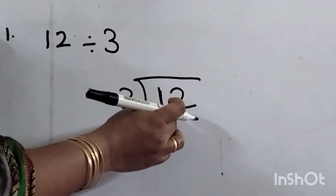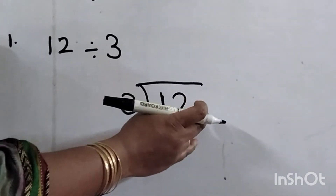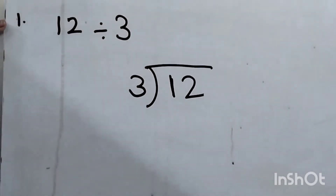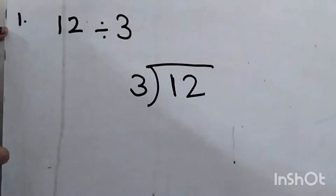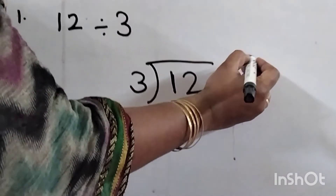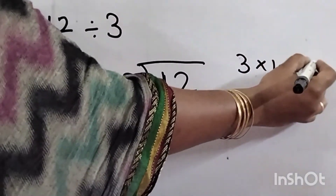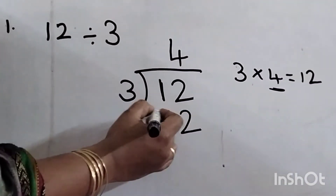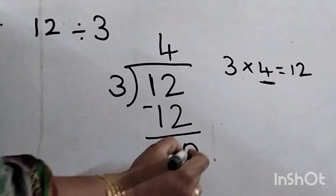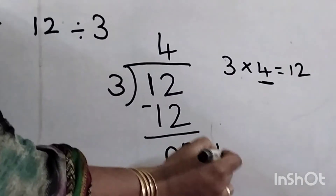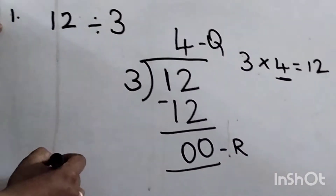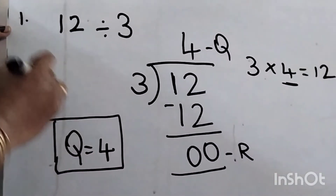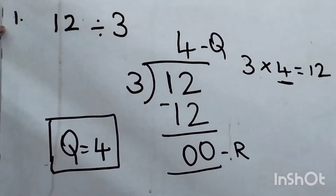If the first digit is less than the divisor, we have to take the next digit also for division. So I am taking 2 also. See 3 tables now: 3 ones are 3, 3 twos are 6, 3 threes are 9, 3 fours are 12. So 4 times 12 — write 4 at the top. Take 12 and write here. 2 minus 2 is 0, 1 minus 1 is 0. Remainder is 0, quotient is 4. So 12 divided by 3 equals 4.